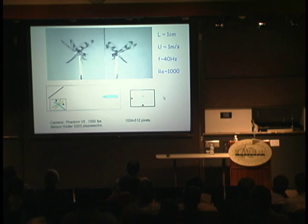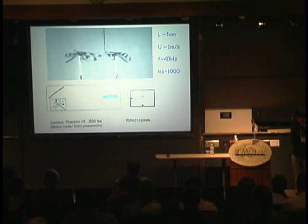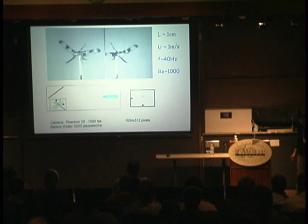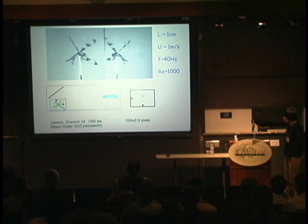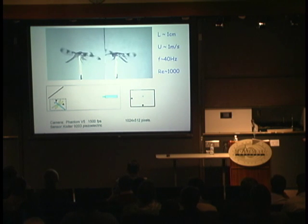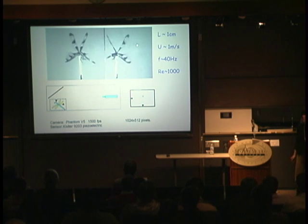If we want to understand the forces on this insect, we first have to look at how the wing moves. What we do is rather crudely catch the dragonfly in the field. Here's a high-speed video at 1,600 frames per second. The typical length scale of the dragonfly wing is about one centimeter, and the tip velocity is about a meter per second — pretty typical of all locomotion speeds.